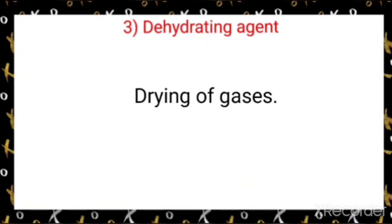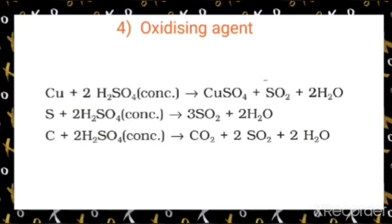Sulfuric acid is also a strong oxidizing agent. It oxidizes metals and non-metals: for example, copper to copper sulfate, sulfur to sulfur dioxide, and carbon to carbon dioxide. These reactions demonstrate its strong oxidizing nature.